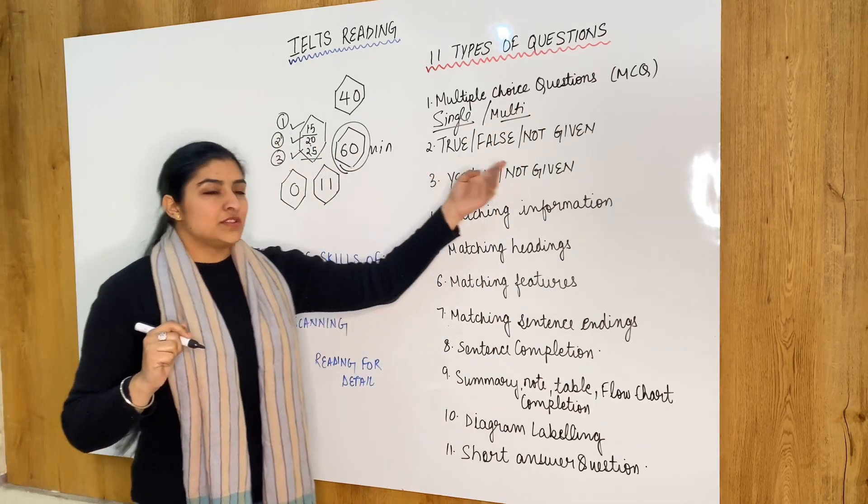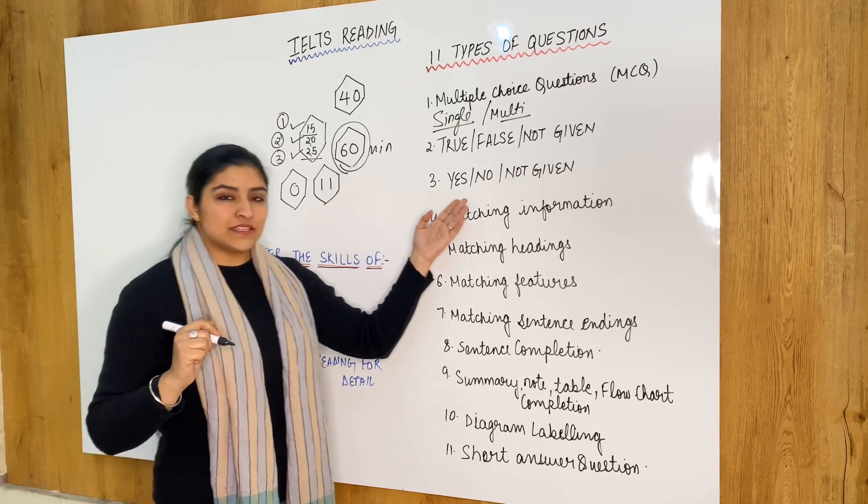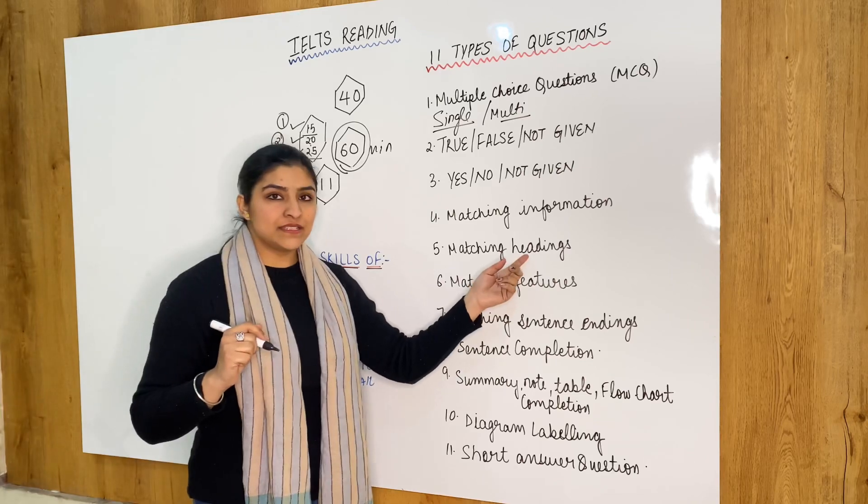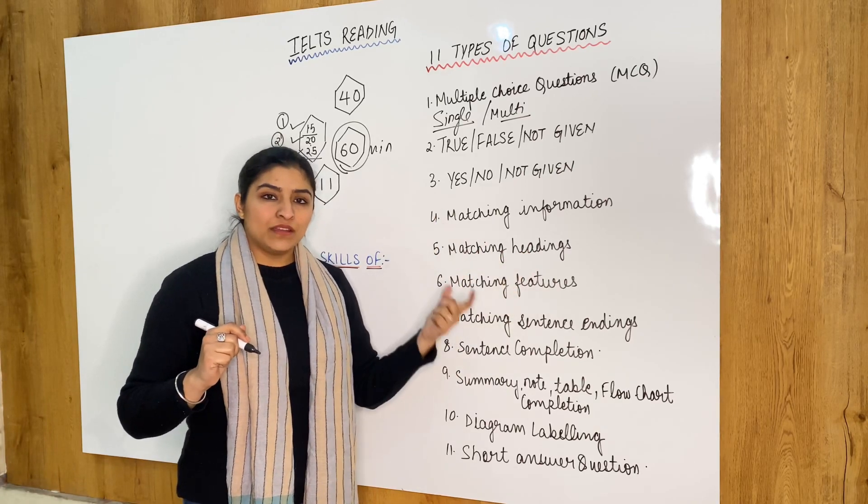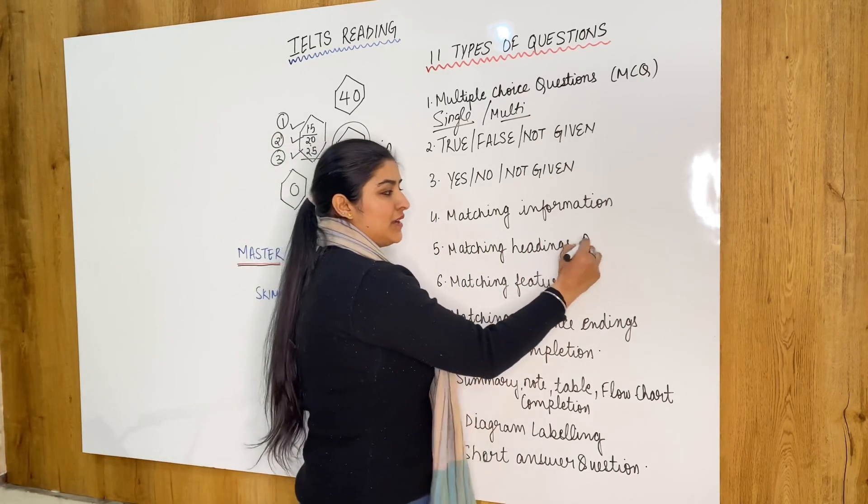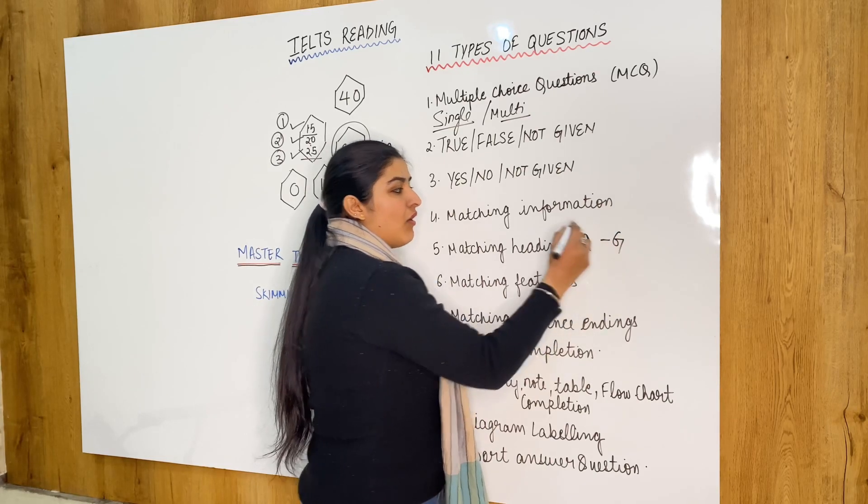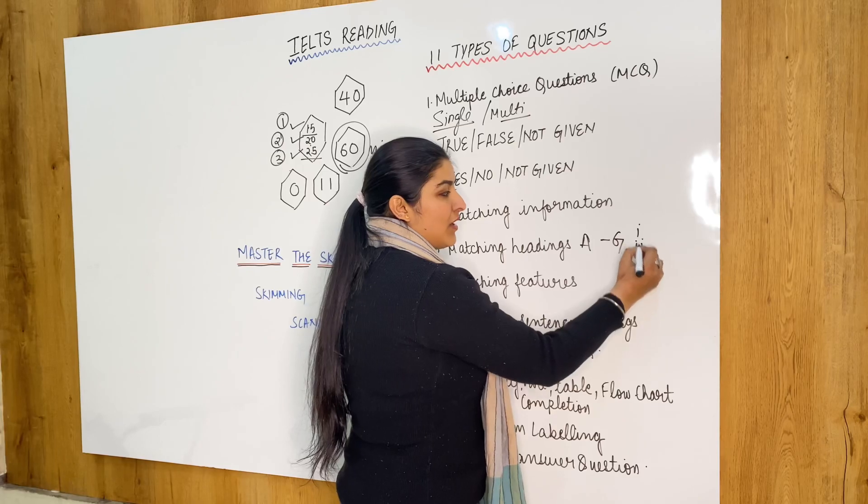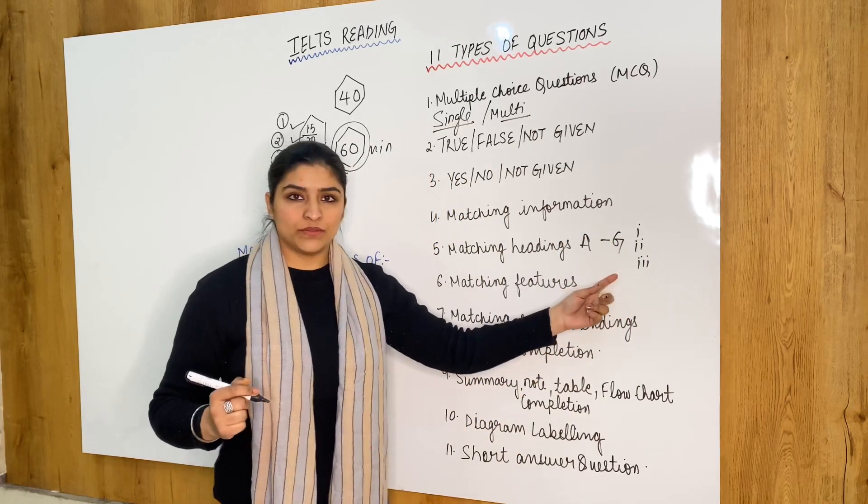Second is true false not given. Third, yes no not given. Matching the information. Matching the headings. In headings you are given paragraph numbering. A to G or any number of paragraphs. And you get the list based on these paragraph numbers.